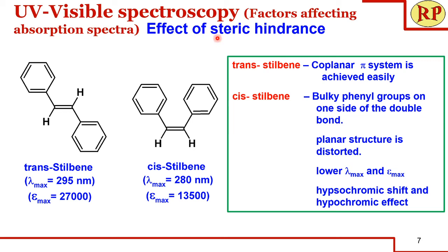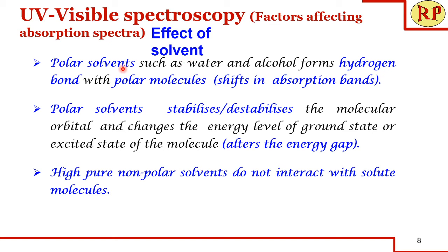The bathochromic shift is accompanied by hyperchromic effect — that is, both lambda max and epsilon max values increase. Looking at the effect of steric hindrance, we take the example of stilbene. In trans-stilbene, coplanarity and the pi system is achieved easily, but in cis-stilbene the two bulky groups are placed on one side of the double bond, distorting the planar structure. This shifts absorption to shorter wavelength, giving a lower lambda max and lower epsilon max — both hypsochromic shift and hypochromic effect.